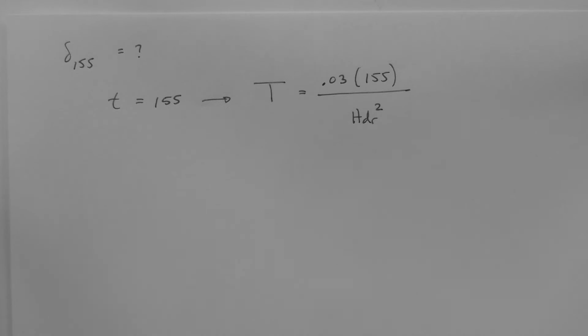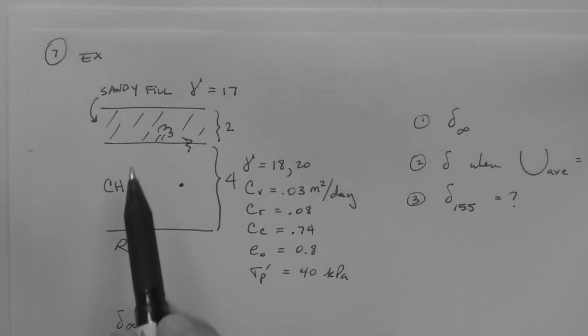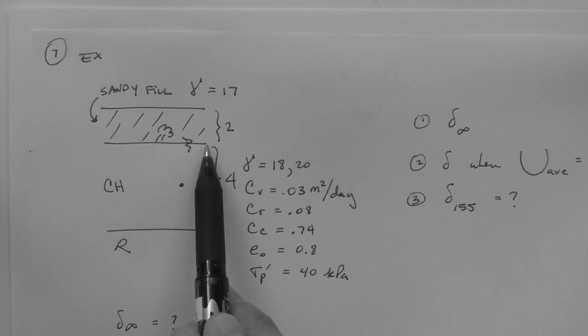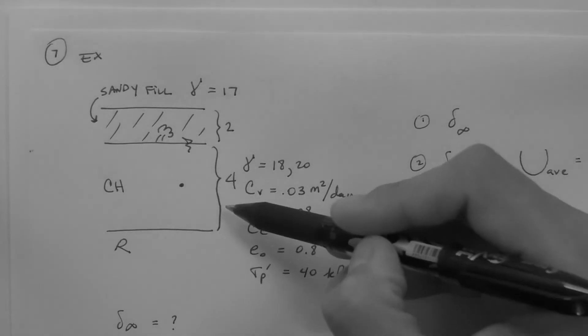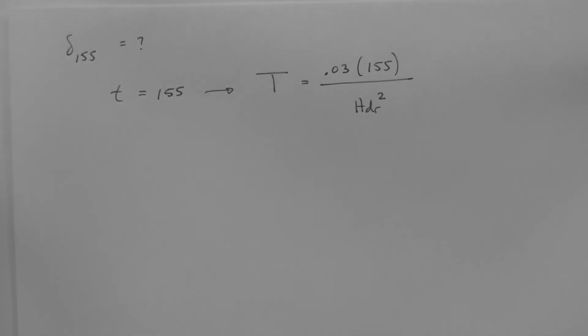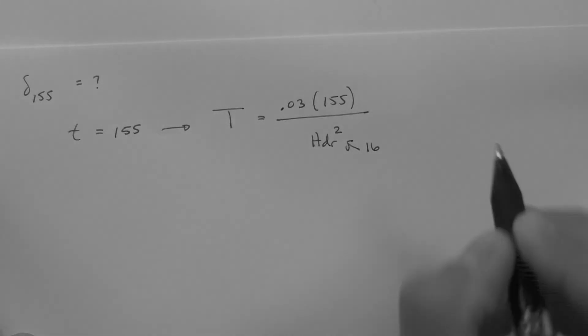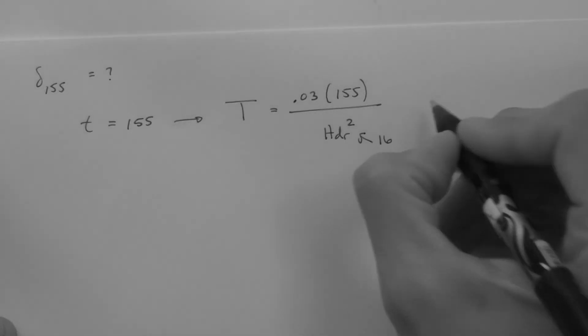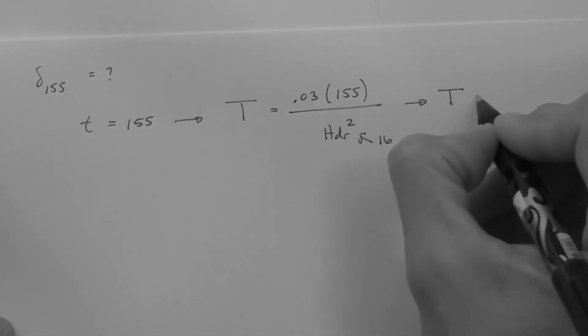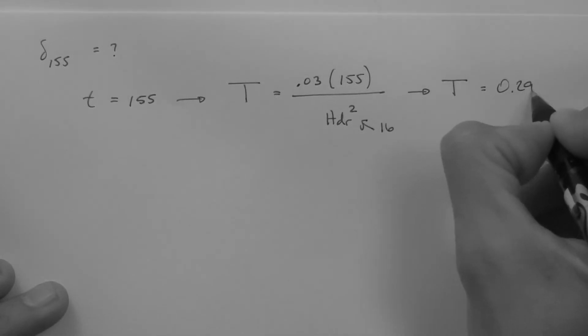What is HDR? The longest drainage path. In this case, we have only one drainage boundary. Therefore, the longest drainage path is the entire layer thickness, which is 4 meters. So, for us, this is 16, 4 squared.